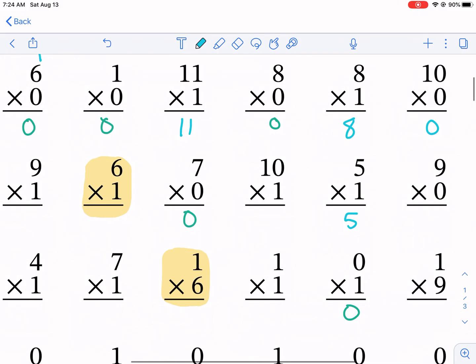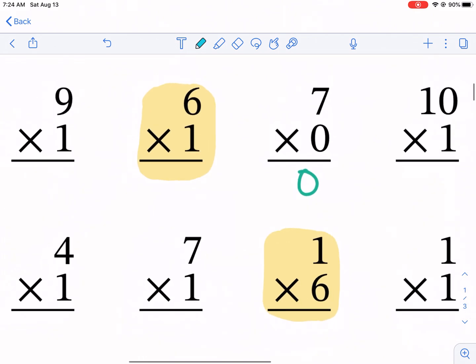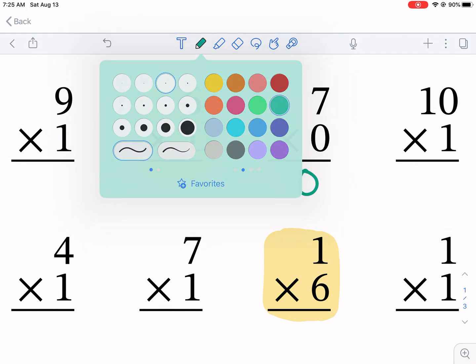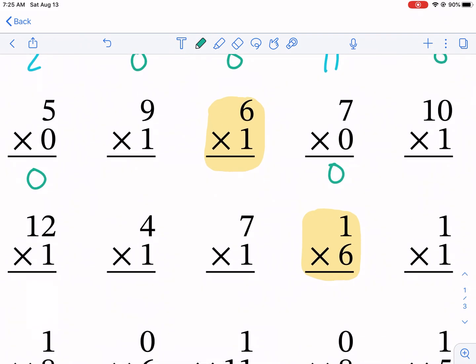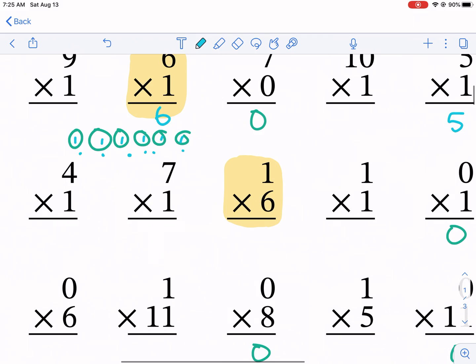Now the reason why I have these two highlighted is because one is six times one and the other is one times six. Is there a difference? Let me just talk about that real briefly. I already said six groups of one. So I have one, two, three, four, five, six, six groups, and then we have one in each group. If we total that up, one, two, three, four, five, six, the answer is six.